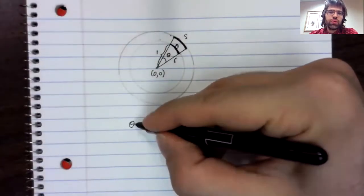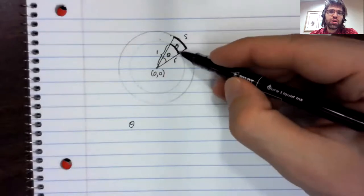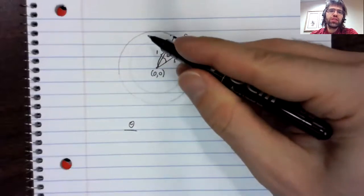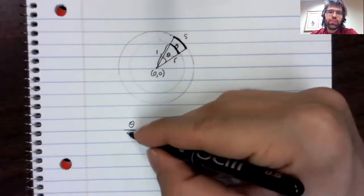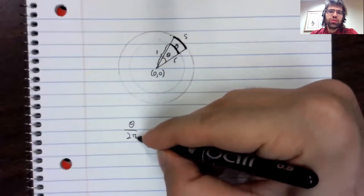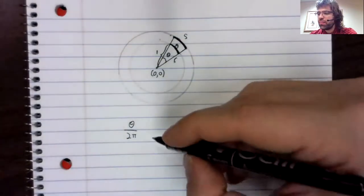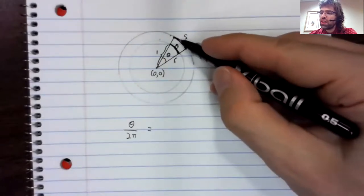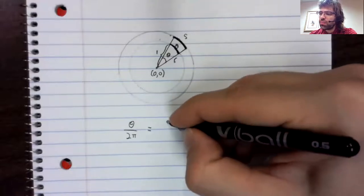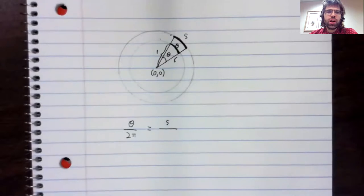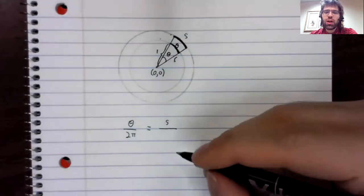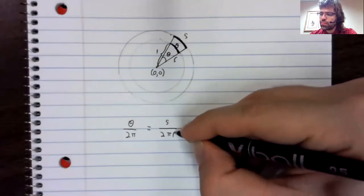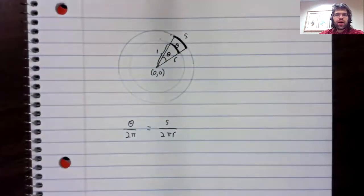the ratio between this arc length theta and the circumference 2π equals the ratio of this arc length S and the circumference of the larger circle, which is 2πR.